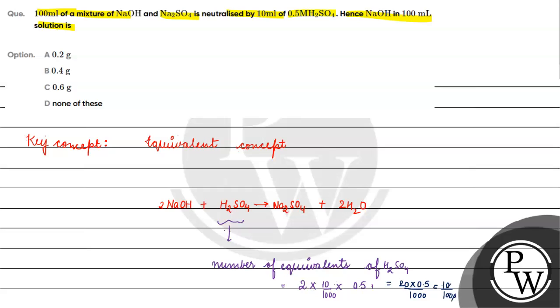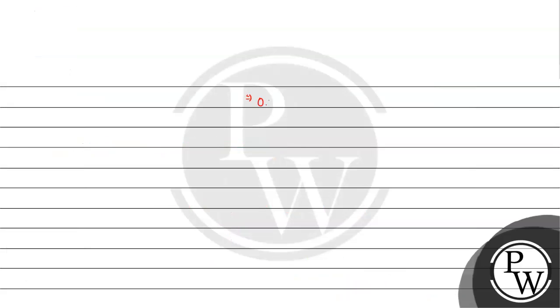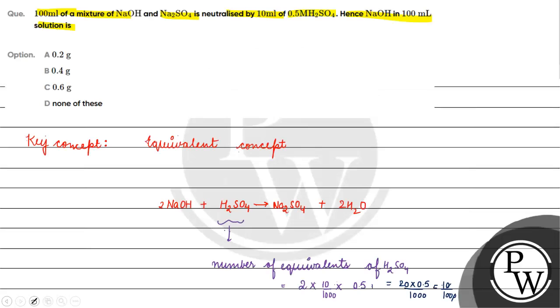We will get 0.01. Number of equivalents of H2SO4 will be equals to 0.01 equivalents.